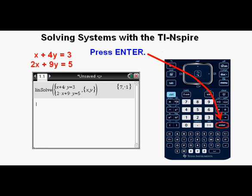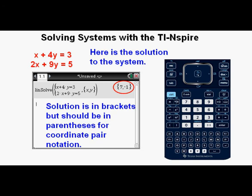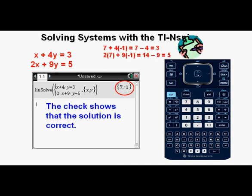Here is our solution to this system, 7, comma, negative 1. It shows in brackets on the calculator screen, but should be in parentheses for coordinate pair notation. And we see that the first equation equals 3, and the second equation equals 5. Check. Now we can go on to the next problem.